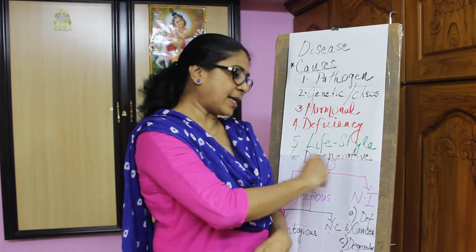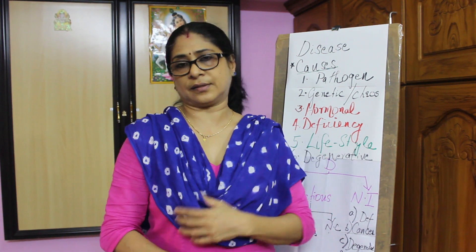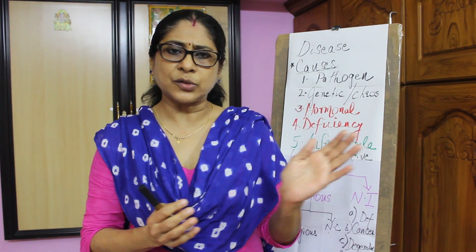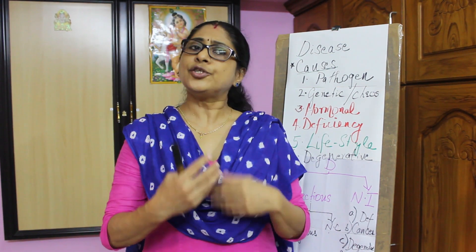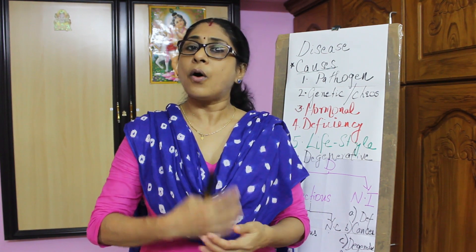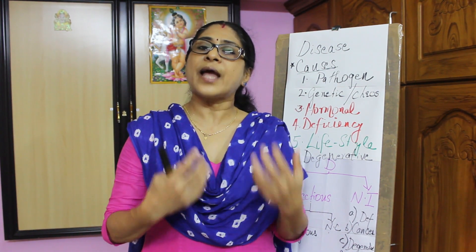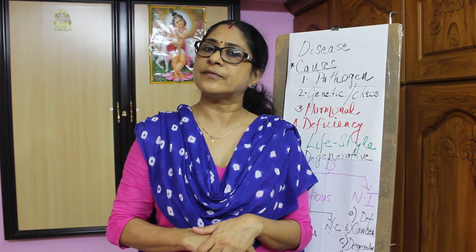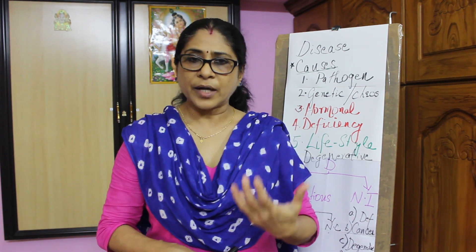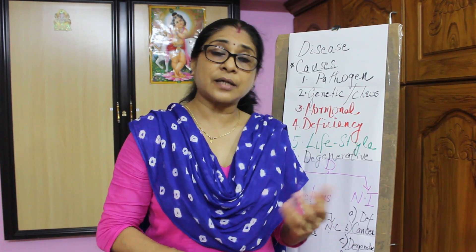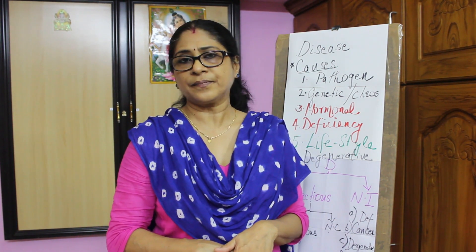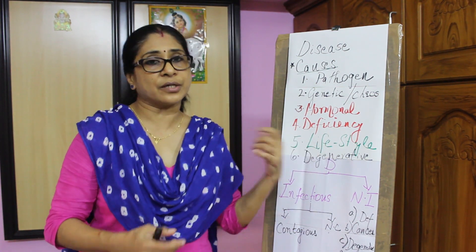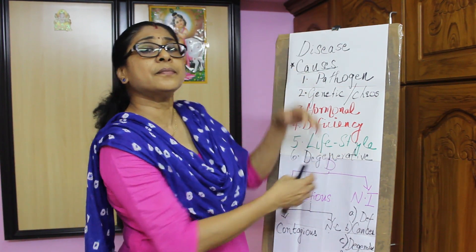We now pass on to degenerative diseases. Degenerative diseases normally occur when a person starts advancing in age. Due to low immunity or certain genetic reasons, there may be degeneration of certain parts in the body. A typical example is arthritis — it could be rheumatoid arthritis or osteoarthritis. Osteoporosis also falls under this category. All these are called degenerative diseases.